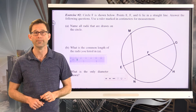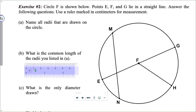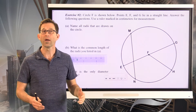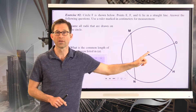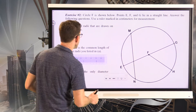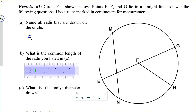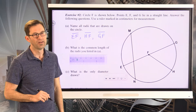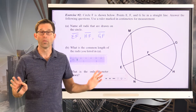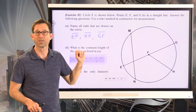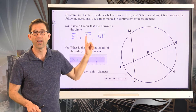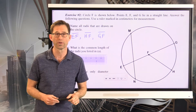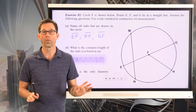Radii are segments that go from the center to a point on the circle. So we can say that segment EF is a radius, segment HF is a radius, and segment GF is a radius. You could also list the letters in the opposite order — FE, FH, and FG — and as we discussed in the geometry unit, it really doesn't matter. So all of those are radii.